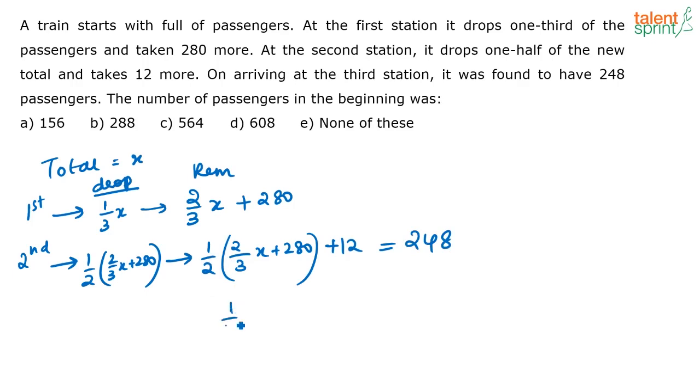So if you take this one by two inside you will get one by three x, that is equal to one by three x plus 140 plus 12 is equal to 248, or one by three x is equal to 248 minus 152. So 248 minus 152 will give you 96, or I can say one by three x is 96, or x is equal to 96 into 3, that is 288, option B.